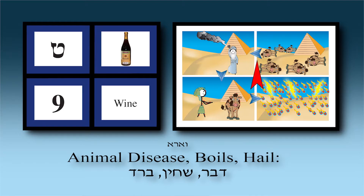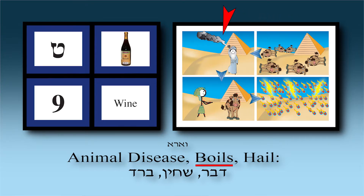Follow the blue arrows to see the sequence. The first picture depicts Dever — the dead animals — all Egyptian livestock died from this terrible pestilence. Pharaoh still refused. Then came Sh'chin: boils brought by the ashes that Moshe threw into the sky; when they came down, boils appeared all over the Egyptians and their animals — you see the Egyptian with red spots all over him and his cows.